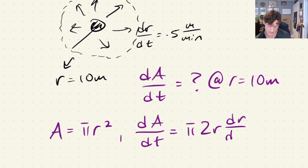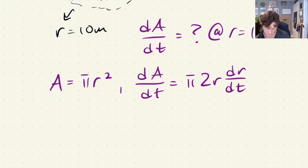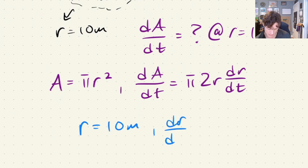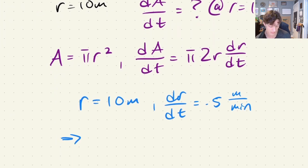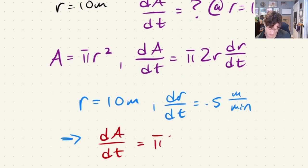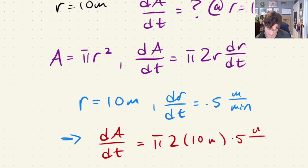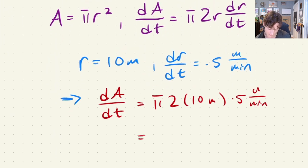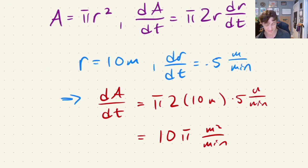Now we substitute in all the information. r equals 10 m is our point of interest, and dr/dt equals 0.5 m per minute. So dA/dt equals π times 2 times 10 times 0.5, with units of meters and meters per minute. 0.5 times 10 is 5, times 2 is 10, giving 10π m squared per minute. That is the rate of increase of the area when r equals 10 m.